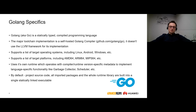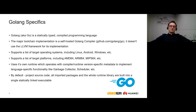GoLang compiler supports various target operating systems and platforms. More importantly, GoLang uses its own runtime library to implement language-specific functionality. By default, the GoLang toolchain builds project code, all packages, and the runtime library into a statically linked executable.